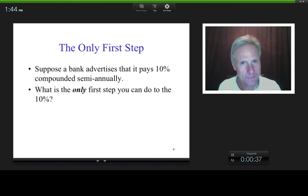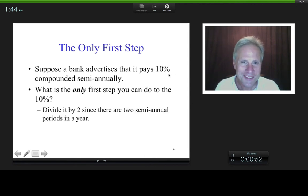In any case, by definition, do you happen to know what the only first step that you can do with that 10%? Well, turns out, by definition, the only thing you can do is divide it by two. Why? Because this 10% right here, that's annual by convention, and there are two six-month periods in a year, and so, by definition, the only first step that you can do with that 10% is divided by two.